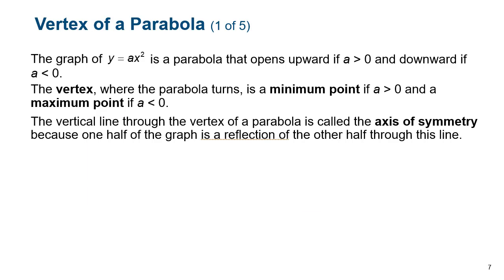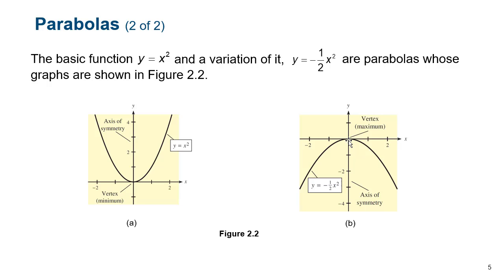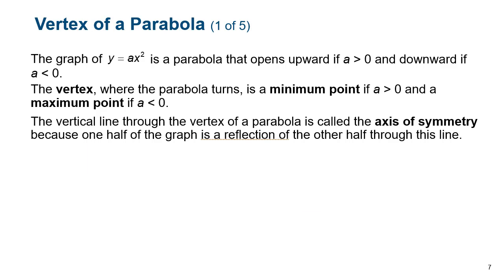That's why the vertex is an important point to find — it gives us the minimum or the maximum of our function. We only concern ourselves with a, the coefficient in front of x squared, also called the leading coefficient. If that leading coefficient is less than 0 — a negative number — then the parabola opens down, and therefore the vertex is going to be a maximum. However, if the leading coefficient is greater than 0 — a positive number — then it opens up, and the vertex is a minimum.